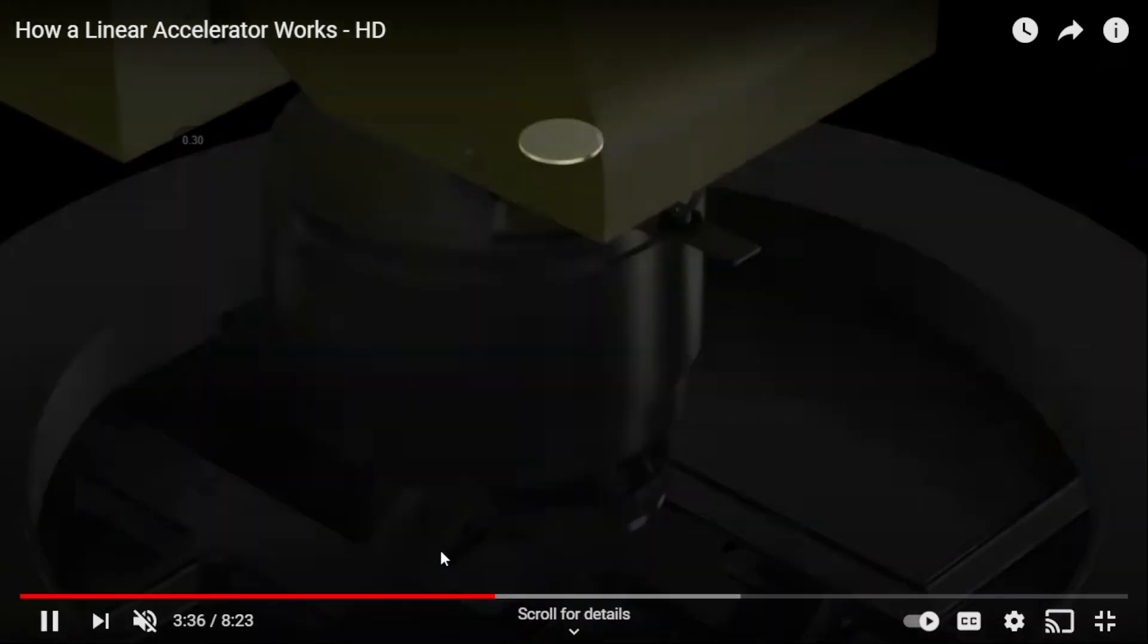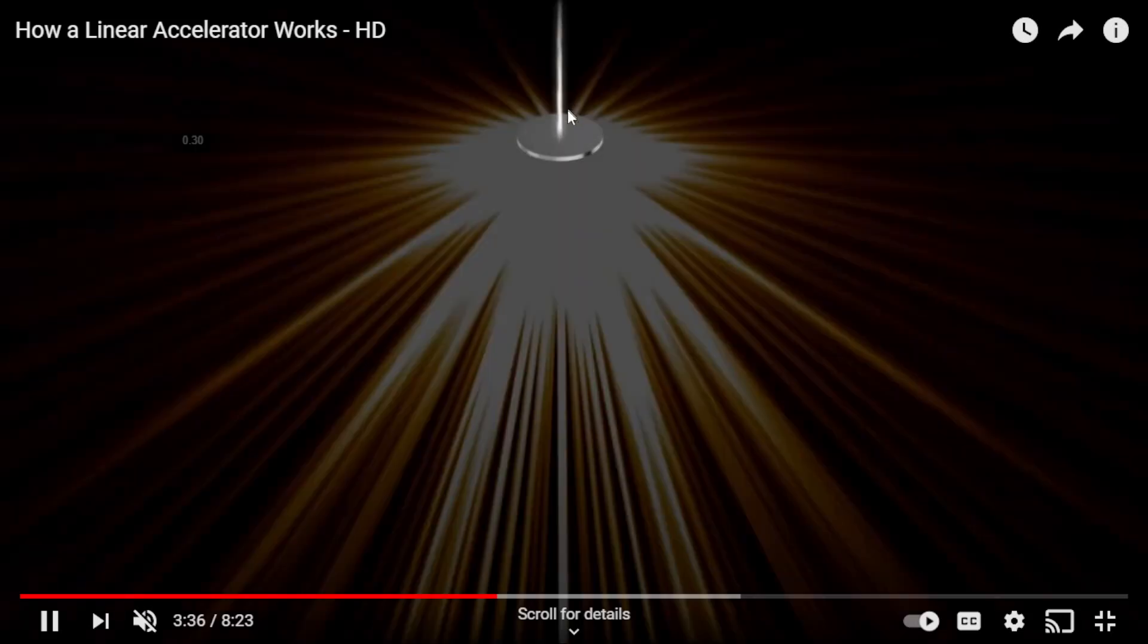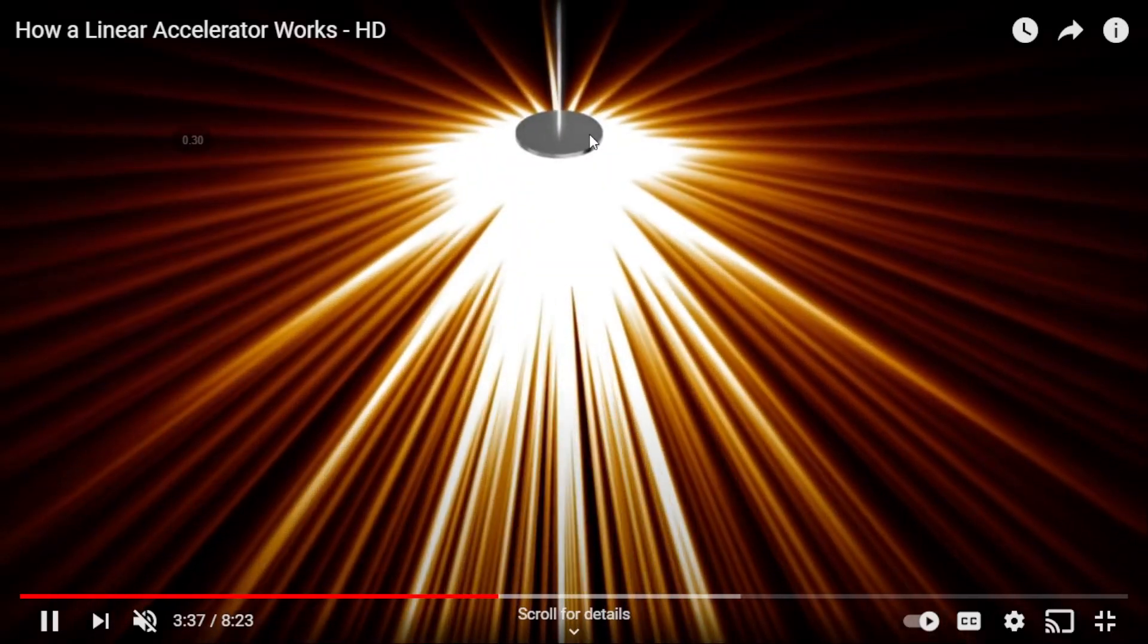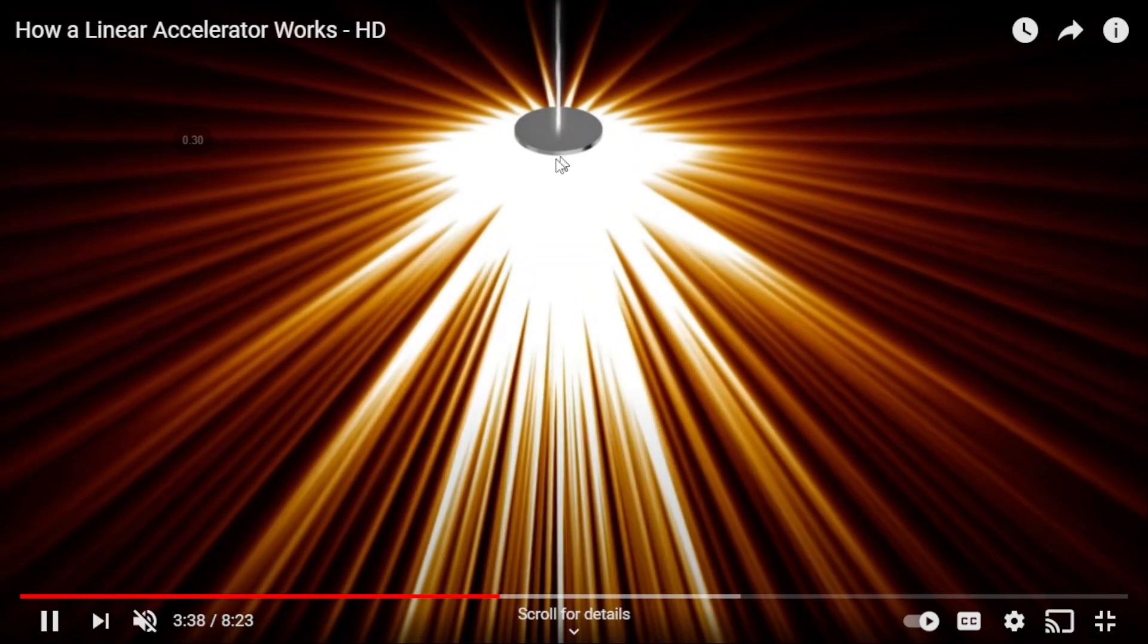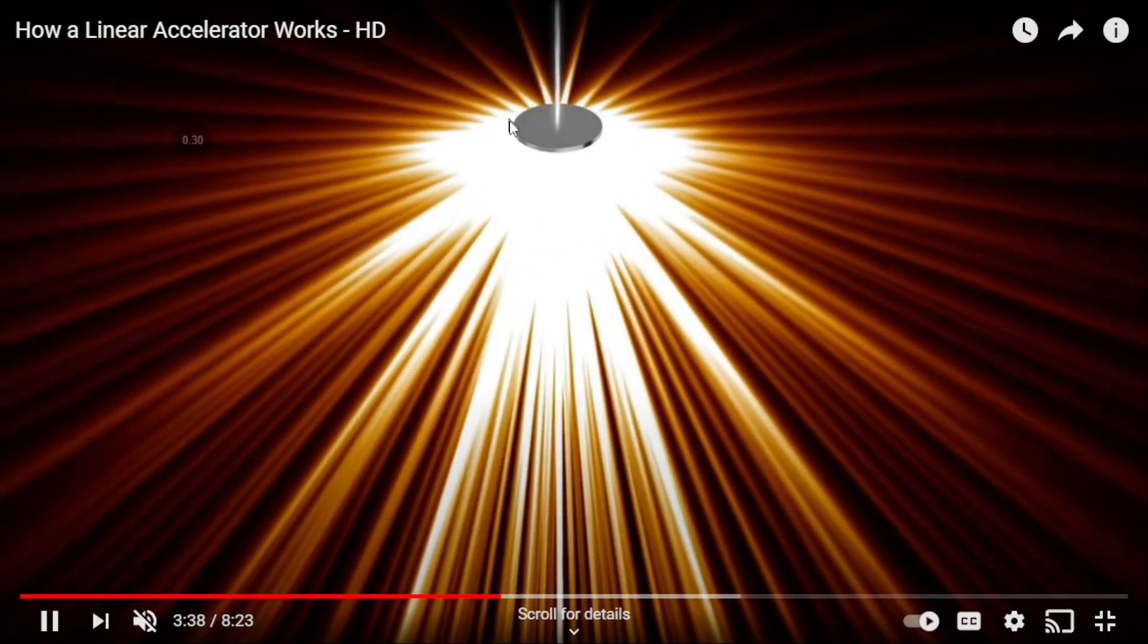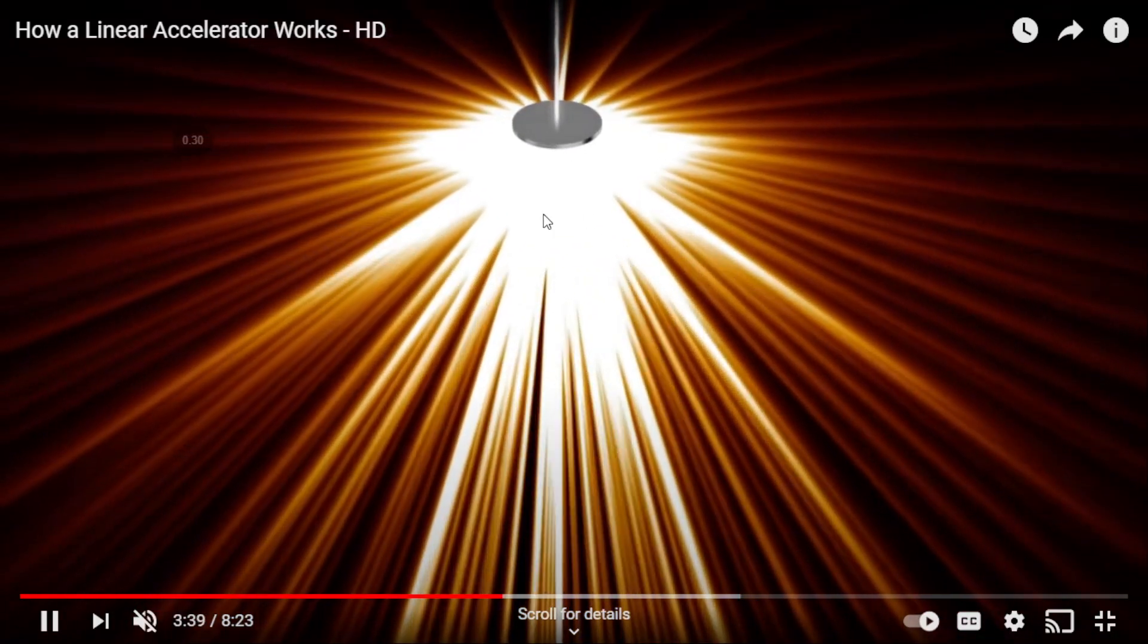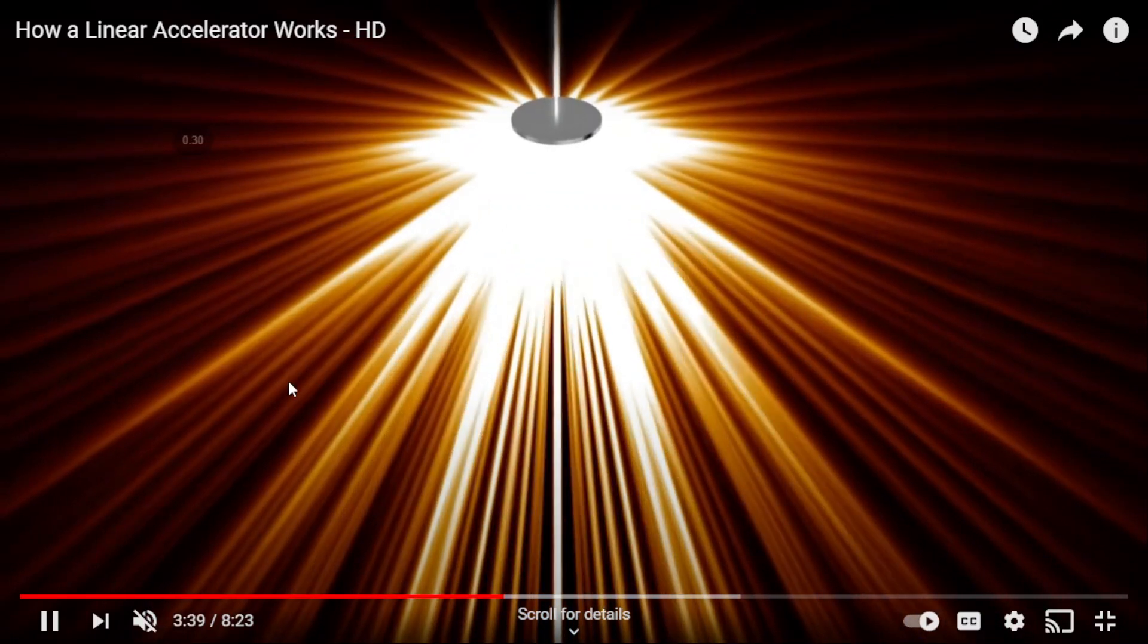Let's move a little bit forward. Here, the electron beam, high-energy electron beam, hits the target, and we have X-ray production on the other side in this target. We can see the divergence of the beam right here.